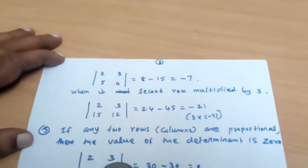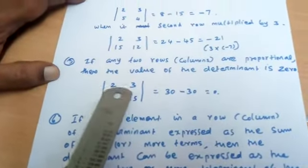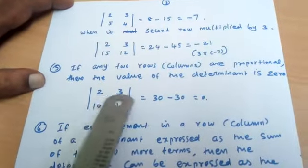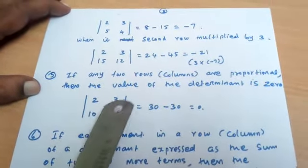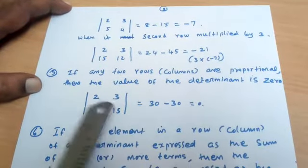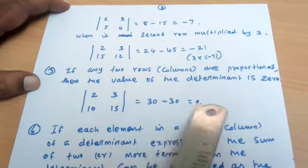First row 2, 3. Proportional means multiplied by this row, each element by 5. 2 into 5 is 10, 3 into 5 is 15. The value is 30 minus 30, which is 0.